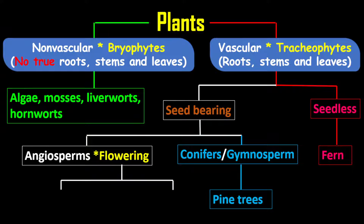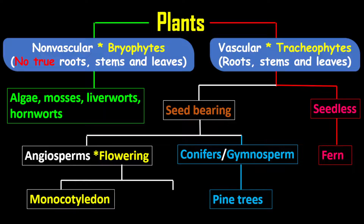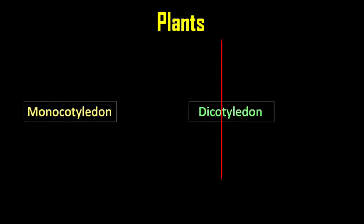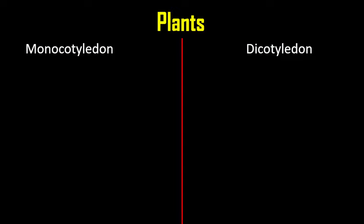For angiosperms, which are flowering plants, they can be broken down into monocotyledon and dicotyledon. So dicotyledon and monocotyledon are flowering plants. Let's take a look now at monocotyledon versus dicotyledon.